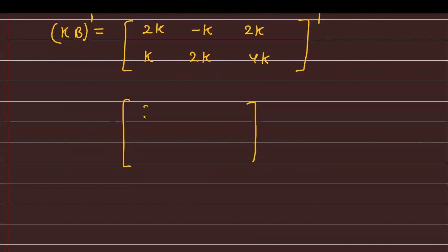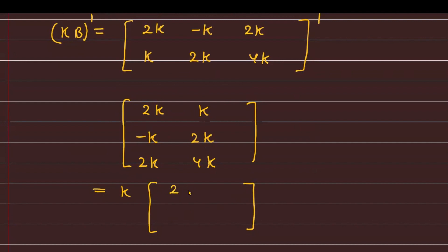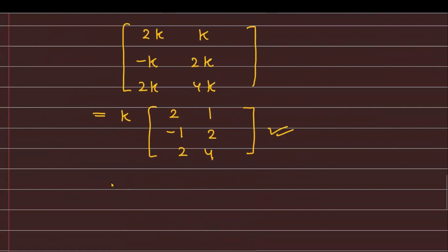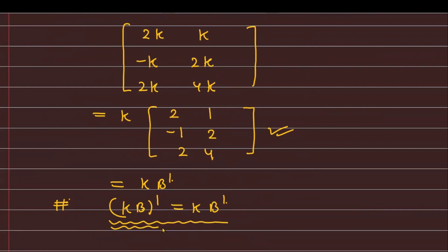Taking k common from this transpose matrix, we get k times the matrix 2, 1 / minus 1, 2 / 2, 4 — and you can see this inner matrix is exactly B^T. So this equals k·B^T. Therefore the third statement is also proved: (kB)^T = k·B^T, and this completes the verification of all three properties of matrix transpose.